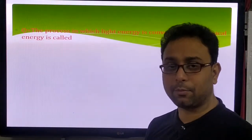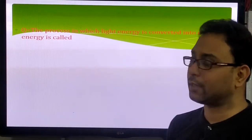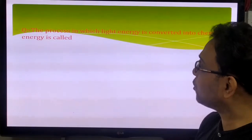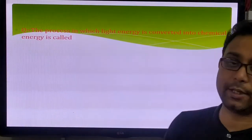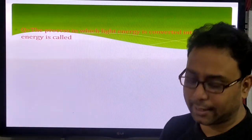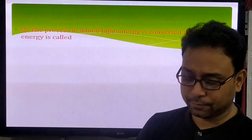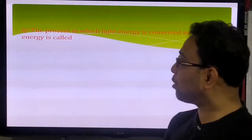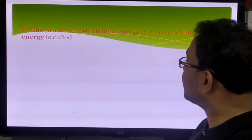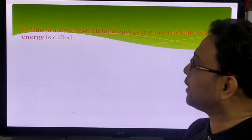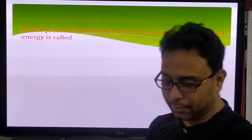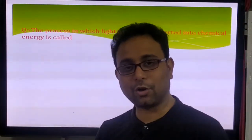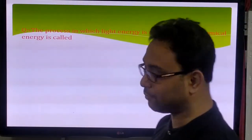Please write down in the chat box: the process in which light energy is converted into chemical energy is called — please write down your answer. The process in which light energy is converted into chemical energy is called photosynthesis. Very good.